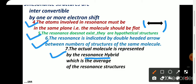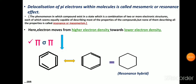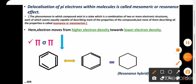We will see all these rules with the help of an example. Another definition of mesomeric effect: delocalization of pi electrons within a molecule is called mesomeric effect or resonance. A more detailed definition is: the phenomenon in which a compound exists in a state which is a combination of two or more electronic structures, each of which seems equally capable of describing most of the properties of the compound but none of them describing all the properties, is called resonance or mesomerism. A single resonating structure will explain most of the properties of that compound but not all of them.